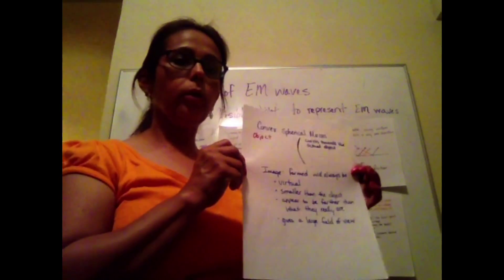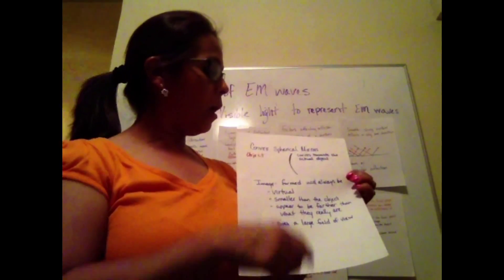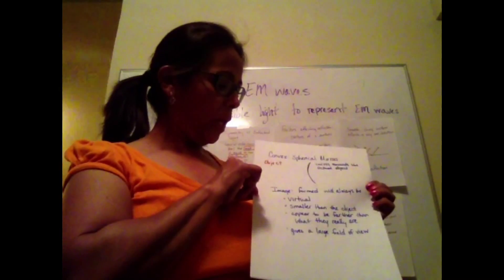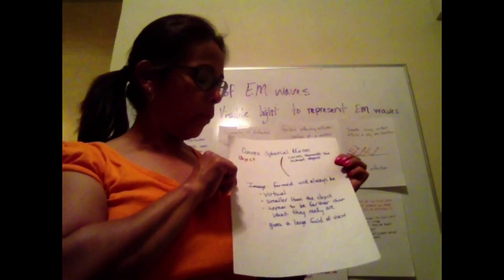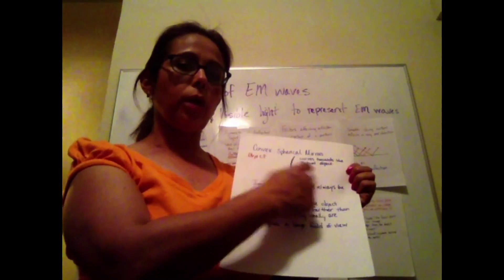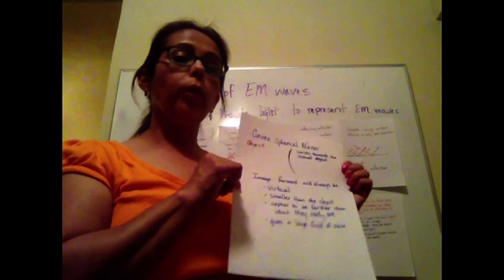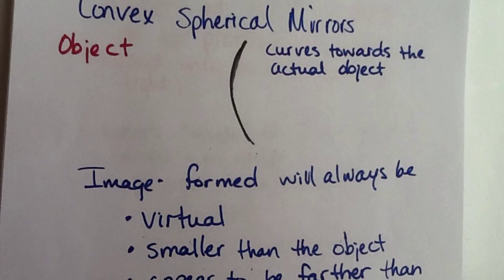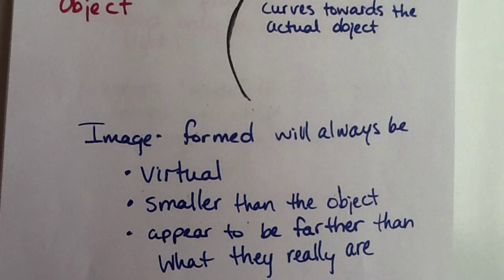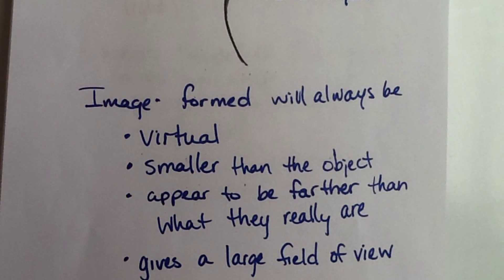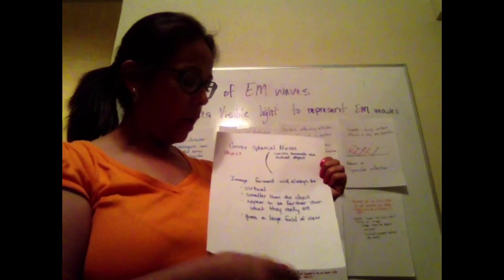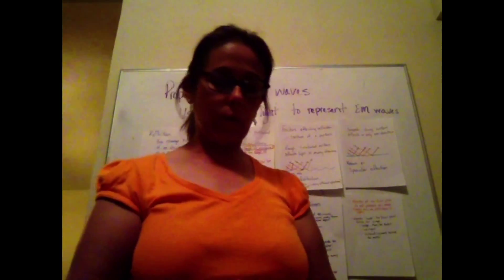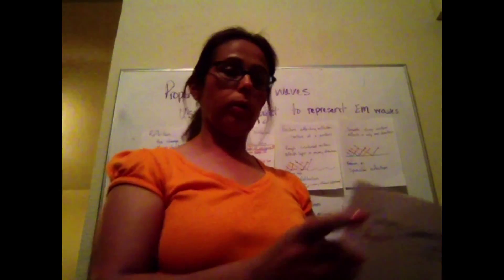The last type of mirror we'll look at today is a convex mirror. Convex mirrors curve towards the object — the bulging part faces you. With these mirrors, there's only one type of image visible: a virtual image where you appear smaller than you really are. Because you appear smaller, it gives the impression that you're further away, when in actuality you're closer — that's why car mirrors say objects are closer than they appear. These mirrors give you a large field of view, which is why they've been placed at building entrances so people stop crashing into each other when walking in.